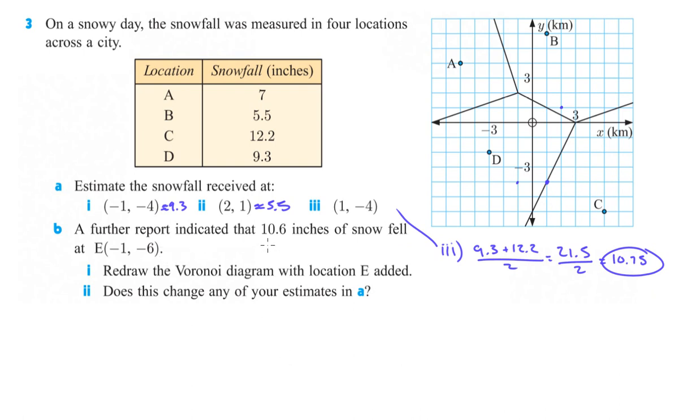Part B says a further report indicated that 10.6 inches of snow fell at E, which is at (-1, -6). 1, 2, 3, 4, 5, 6. So this is now site E. Okay. Redraw the Voronoi diagram with location E added. So it looks like it's really only going to affect C and D, right? Because it looks like it's going to intersect.